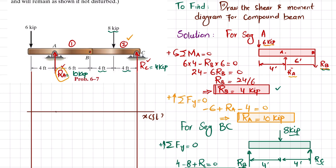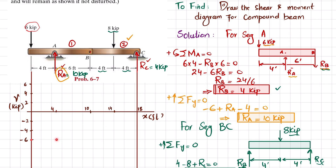The beam is divided at: 4 feet, 10 feet (point A to B is 6 feet), and 14 feet, with total length 18 feet. The shear force will be in kips, with each division equal to 2: so 2, 4, 6 and −2, −4, −6. At the left end there is a 6 kip load, so the first point is at −6.